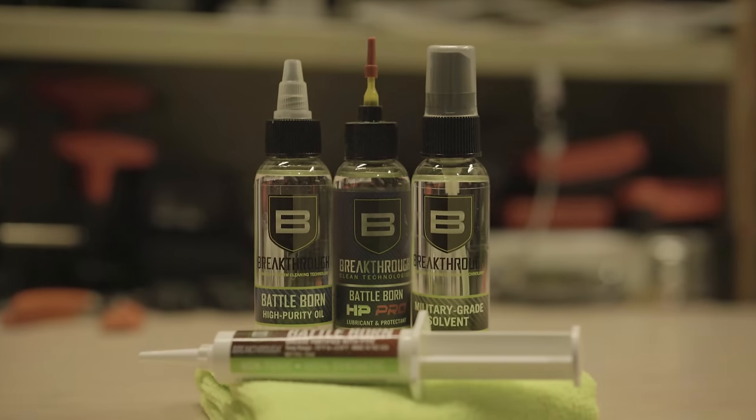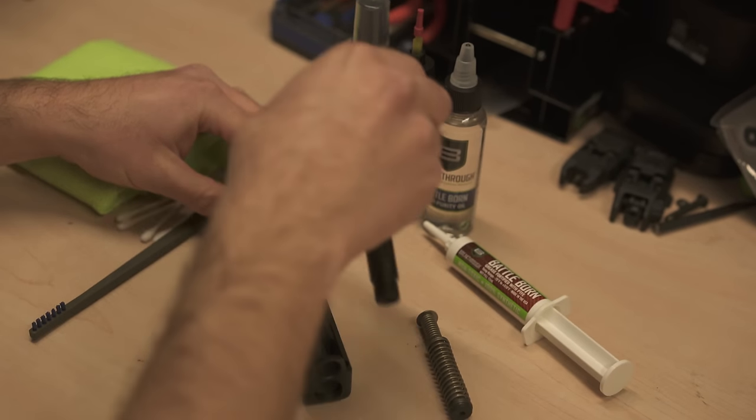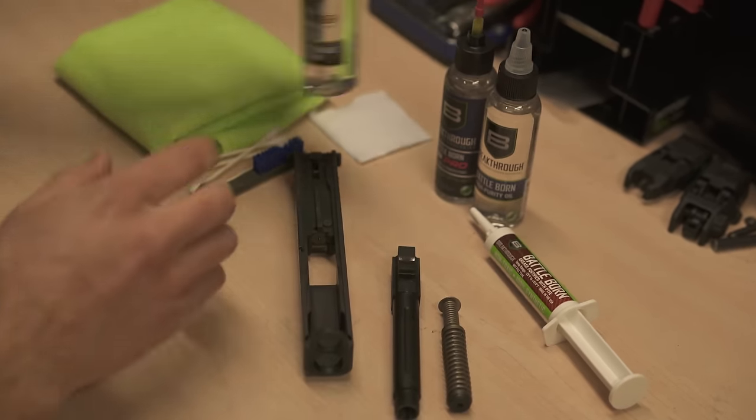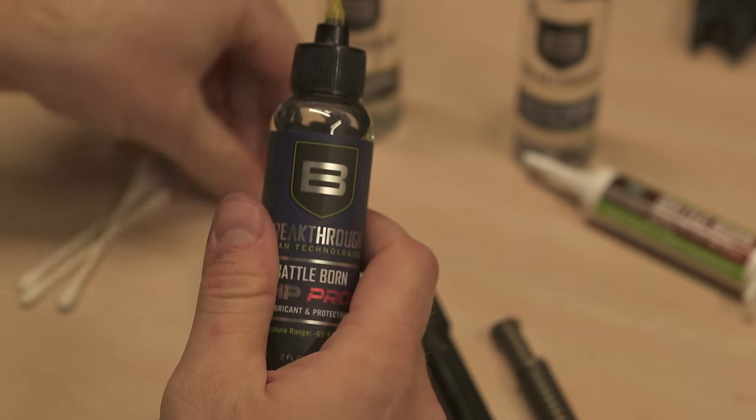Cleaning a gun stinks unless you're using Breakthrough Clean's odorless and non-staining solvents and lubricants to tackle your gun cleaning needs. Be sure to check out their military grade solvent, battle burn oil and grease, or even the HP Pro for extreme conditions. If you asked and your local shop isn't carrying them, head on over to BreakthroughClean.com and use the code TGC10 to get 10% off your order.